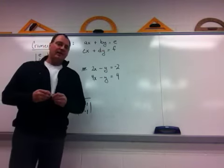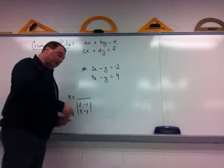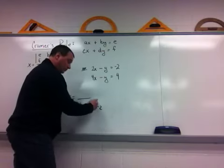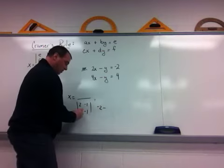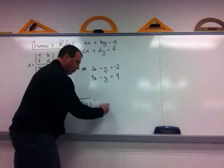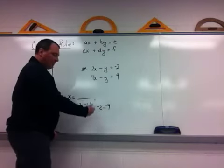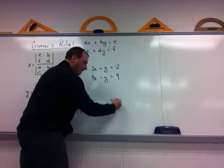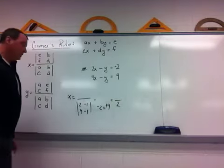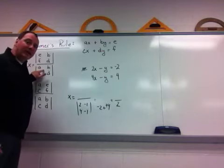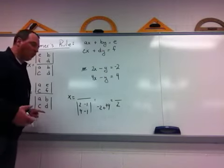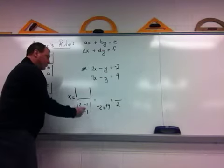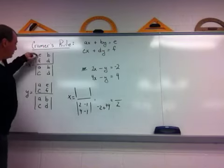Keep in mind, to find the determinant of that, I'm going to multiply the diagonal this way, taking 2 times negative 1, which would be negative 2, minus multiplying the diagonal that way, 4 times negative 1, which is negative 4. And if I take negative 2 minus a negative, I'm going to get a positive 2. Now I know that the denominator of x is going to be 2, as well as y. So y is something over 2 as well.